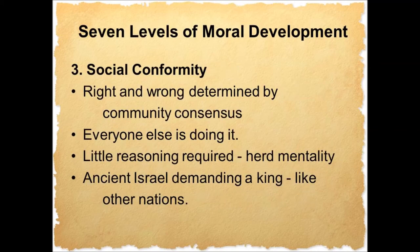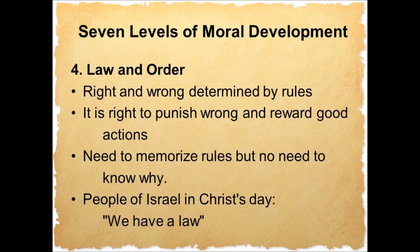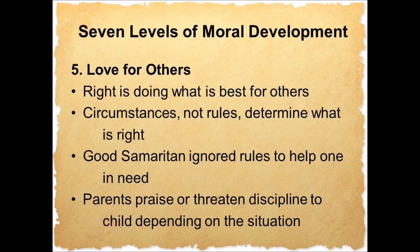Level two is also Israel at Mount Sinai saying, 'All that the Lord has spoken, we will do' — promising to act morally in exchange for God's protection and supply of their needs. Level three is social conformity: right and wrong is determined by community consensus. Everyone else is doing it — there's little reasoning required, it's the herd mentality. It's ancient Israel demanding a king like other nations. Level four is law and order: right and wrong is determined by rules. It is right to punish wrong and reward good actions. We need to memorize rules, but there's no need to know why. It was the people in Israel in Christ's day saying, 'We have a law.' The Pharisees were very big on the letter of the law.